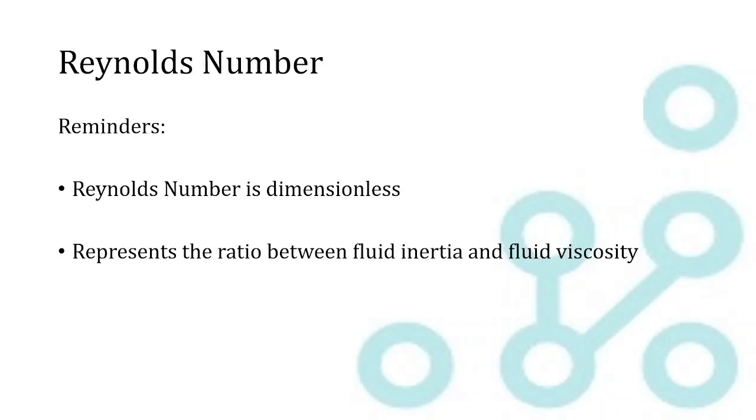And some quick reminders, the Reynolds number is dimensionless itself, so you shouldn't end up with any units on your Reynolds number. And physically, it represents the ratio between fluid inertia and fluid viscosity. So the terms in the numerator represent how much the flow is pushing through the pipe. And the term in the denominator, the viscosity, represents how much the pipe is pulling on the plug of fluid that's flowing through the pipe.